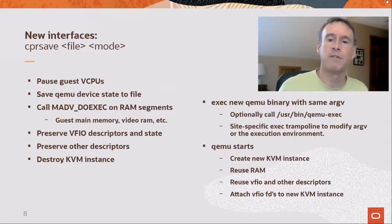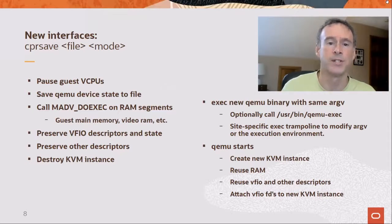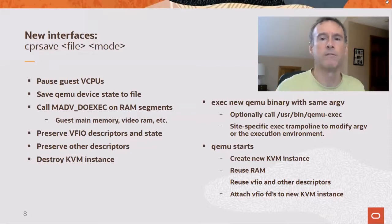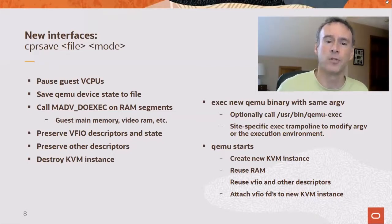It destroys the old KVM instance and execs the new QEMU. However, if /usr/bin/qemu-exec exists, we call that instead. A site may provide this binary to customize the update procedure by changing the QEMU binary path, changing the argv, or modifying the execution environment. We use it to run QEMU in a container environment, for example. qemu-exec finishes off by executing the new QEMU binary.